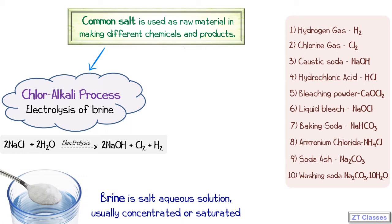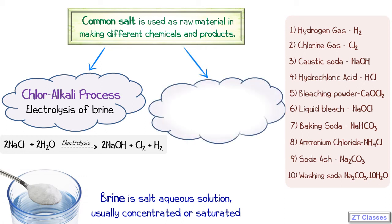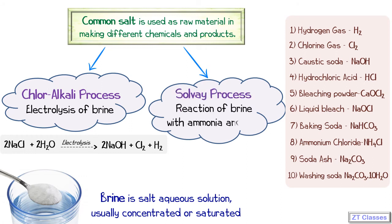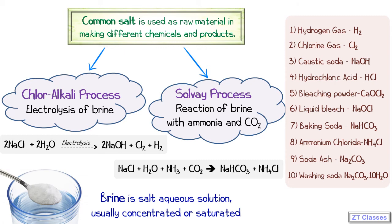The second reaction is the Solvay process. Here, we react brine with carbon dioxide and ammonia. Brine is NaCl plus H₂O, ammonia is NH₃, and carbon dioxide is CO₂. The products obtained are sodium bicarbonate and ammonium chloride.